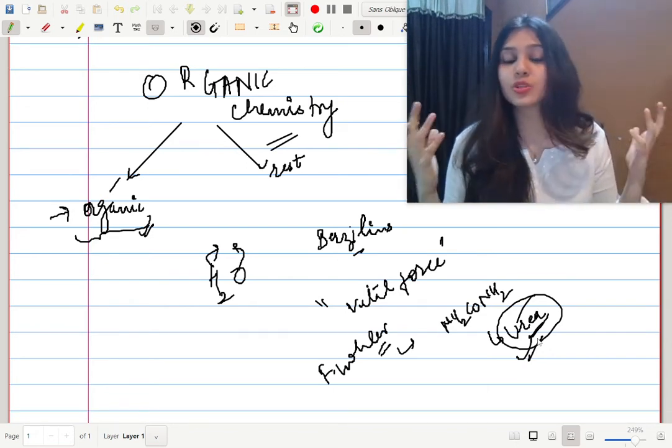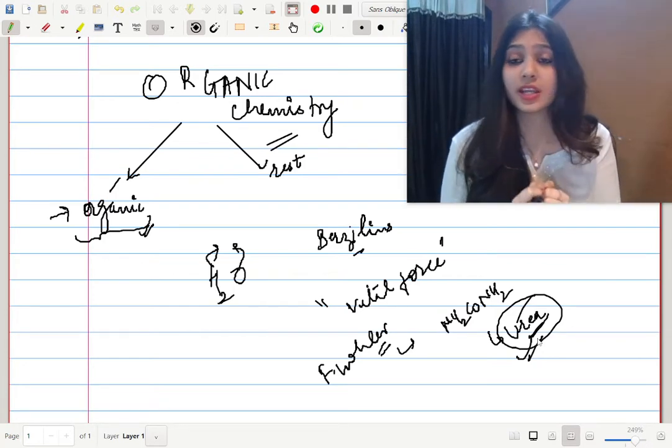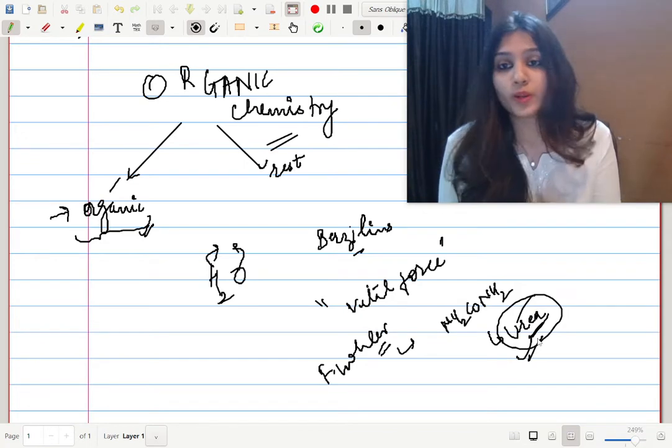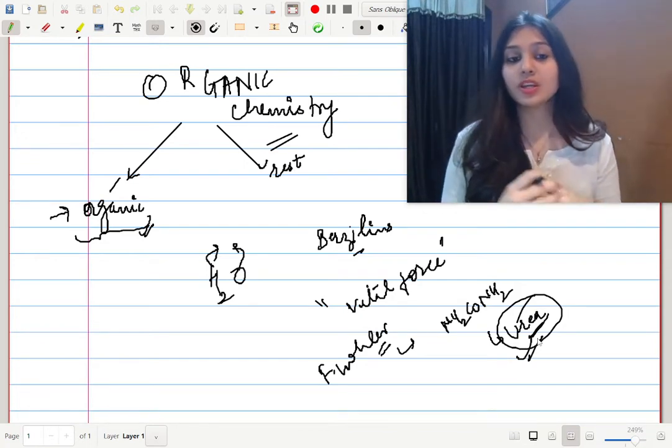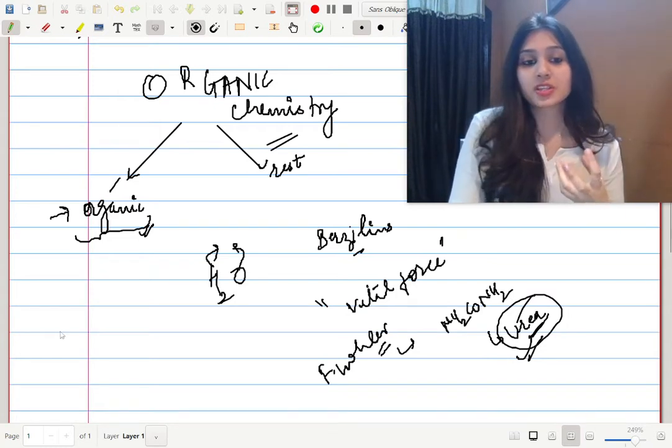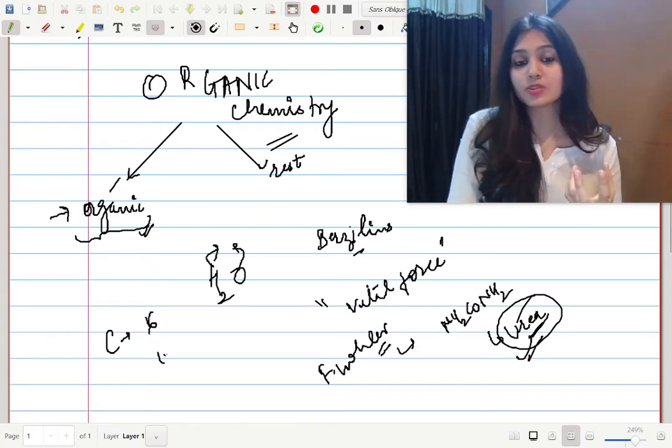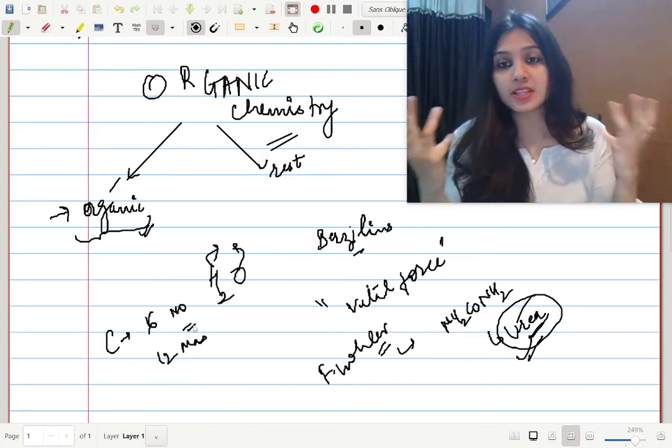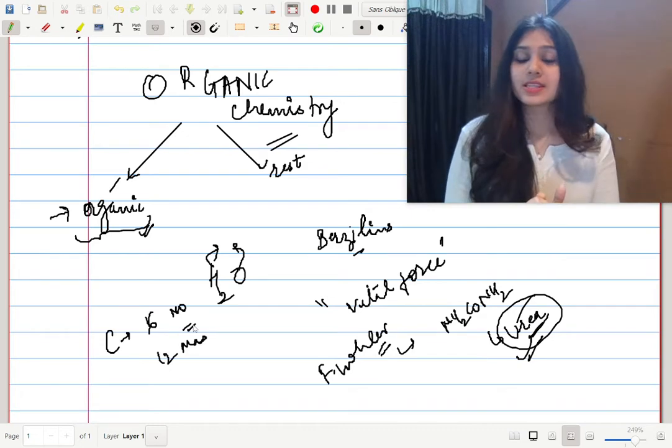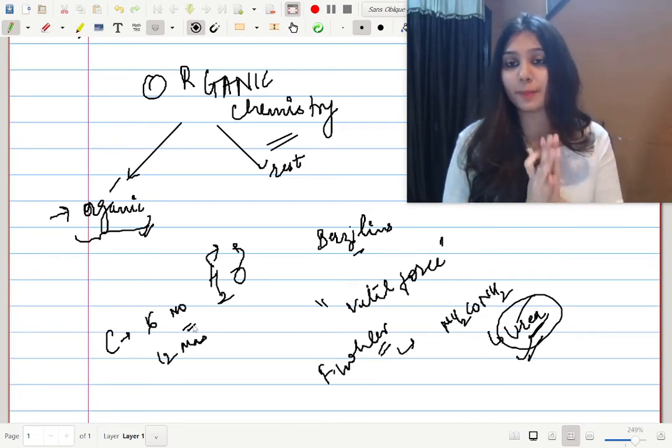And that is when your organic chemistry was born. After that, it's like millions and trillions of organic compounds we know of and we are studying every day. There's a small atom called carbon, with atomic number 6 and atomic mass 12. This is the atom.